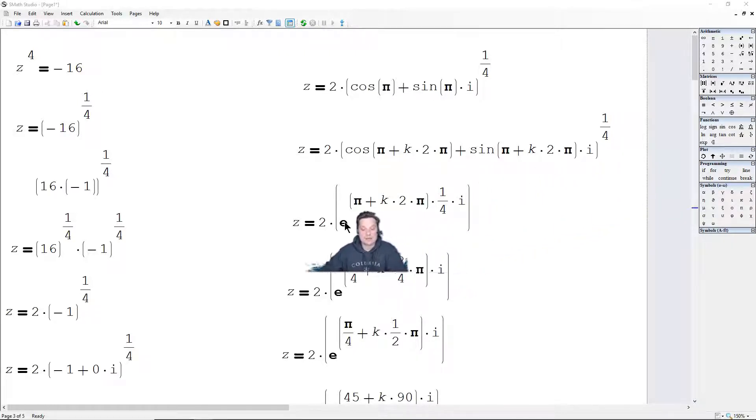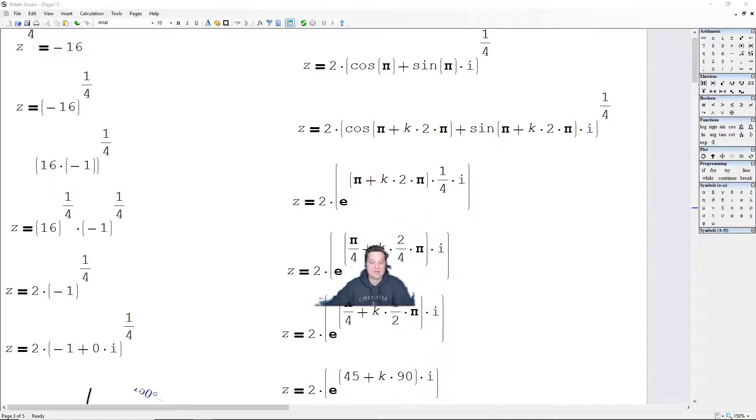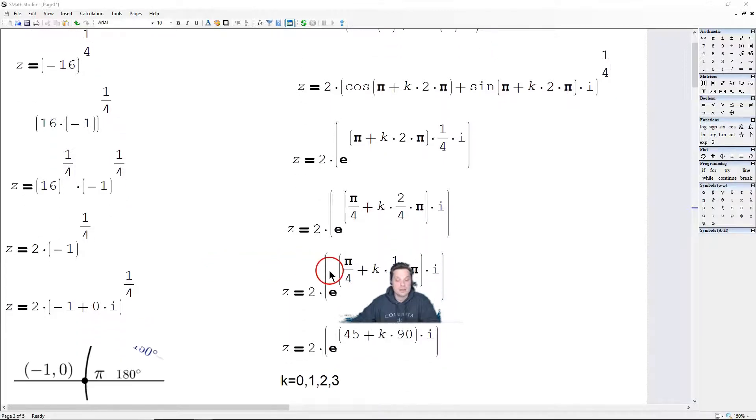So then I'm going to take that 1/4 and distribute it to the pi and the k times 2pi individually using the distributive property. So it's going to give me now pi over 4 plus k times 2pi over 4i. Now that part, that's 2 over 4, you can simplify that. So it's going to become 1/2 in that position. So now it's 2 times e to the pi over 4 plus k times 1/2 pi with the i on the outside.